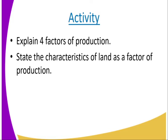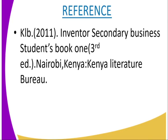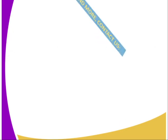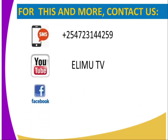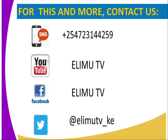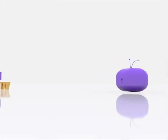Activity: one, explain the four factors of production. Two, state the characteristics of land as a factor of production. For reference, visit the KCSE 2011 Inventor Secondary Business Student Book 1, 3rd edition. If you have any questions, you can reach us through SMS, YouTube, Facebook, or Twitter. Stay tuned to RIM TV. Thank you.